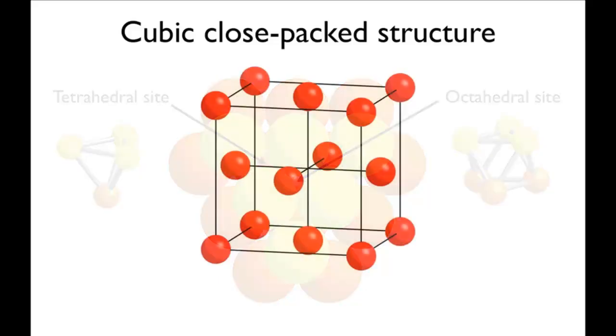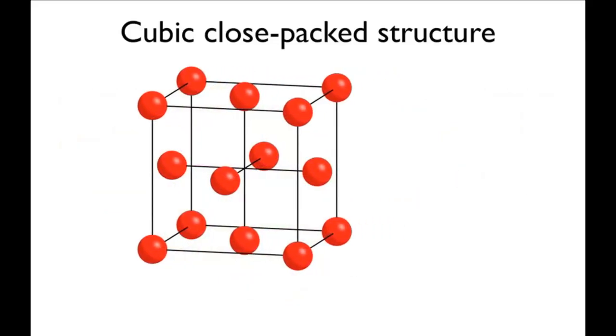Looking at a unit cell, there are eight atoms on the vertices, each contributing one-eighth, and six atoms on the faces, each contributing a half. This gives four atoms per unit cell.